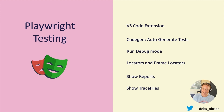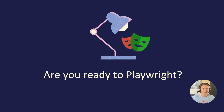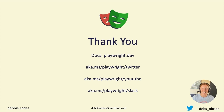To summarize Playwright testing: the VS Code extension, CodeGen which auto-generates your tests, run in debug mode, locators and frame locators for iframes, show reports and trace files, auto-wait built in for all actions (no need for setTimeout calls), tests run in parallel for super-fast execution, multiple browsers and devices, request interception, follows all redirects, bypasses CORS, manages cookies. Are you ready to Playwright? Welcome to the Playwright community — thanks for watching. Let's write tests: component tests, end-to-end tests, everything with Playwright. Thank you very much, bye!